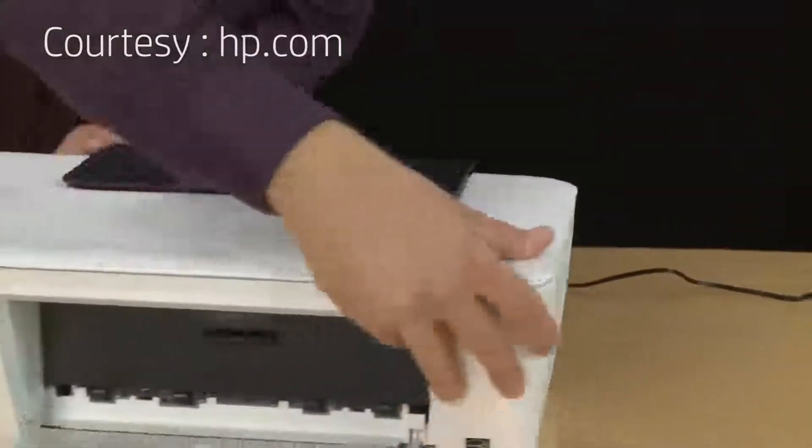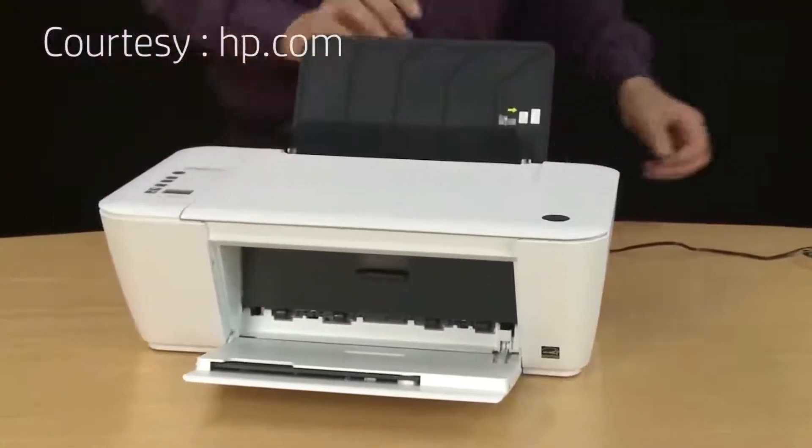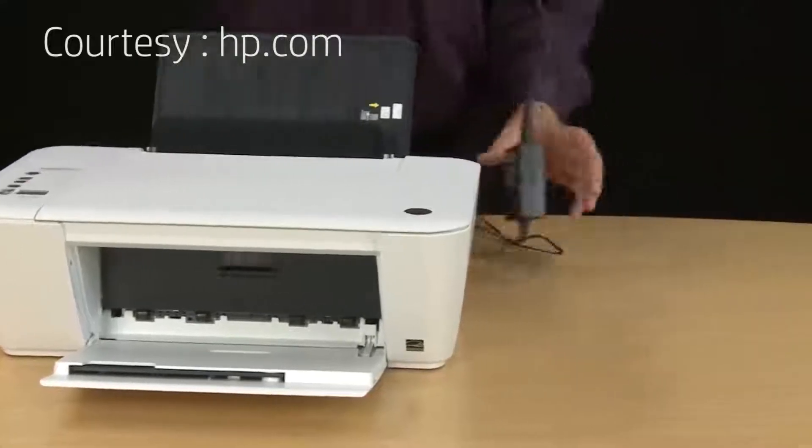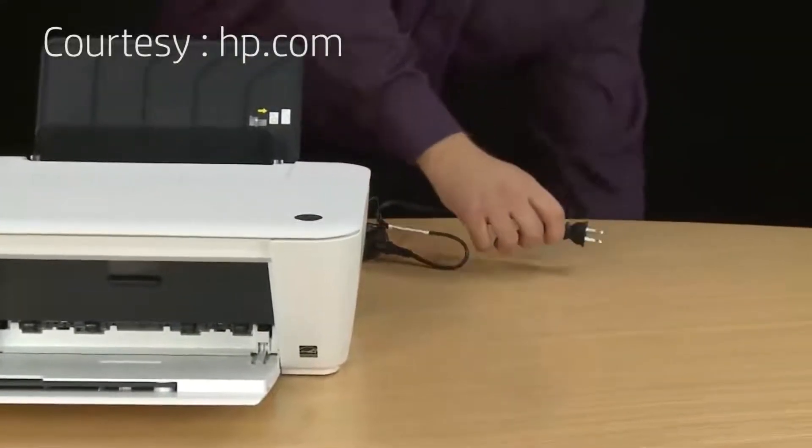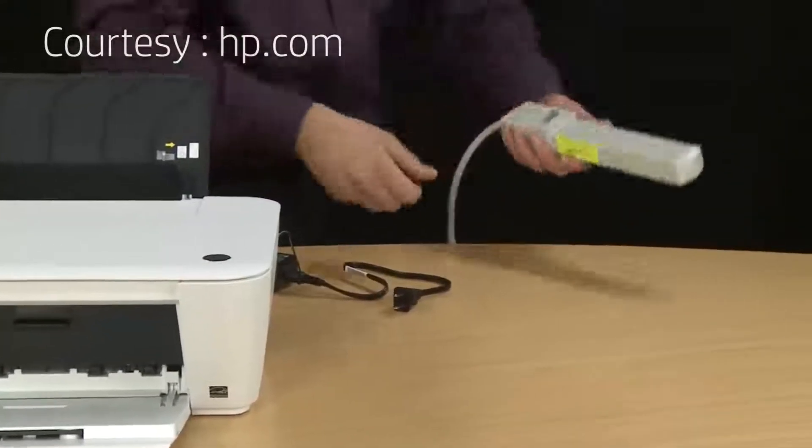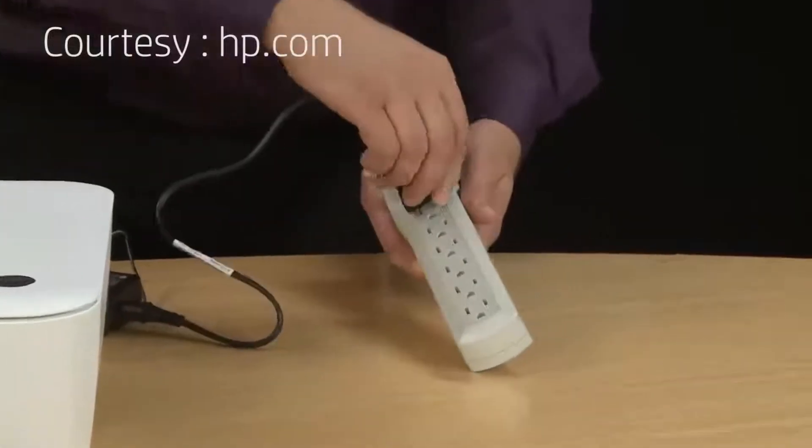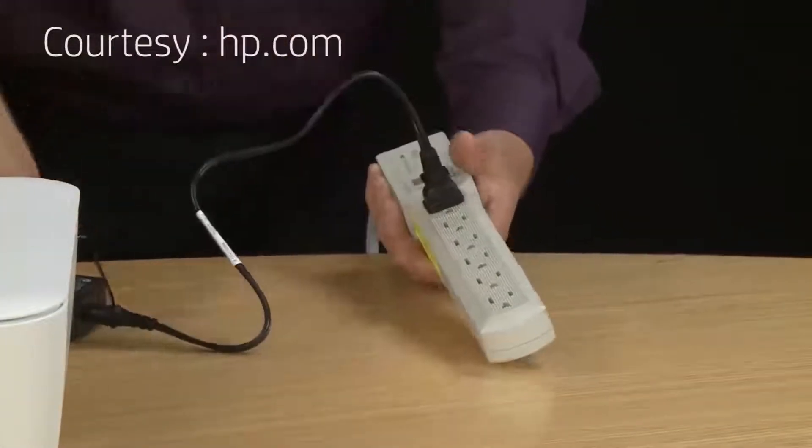Now go back to the front of the printer and we're going to plug the power cord into a power source. For this video we're using a power strip, but HP recommends that you plug your printer directly into a wall outlet to prevent any power issues.